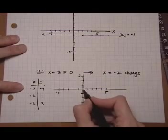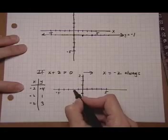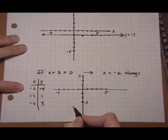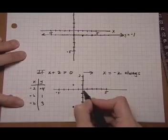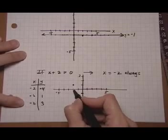So if x is minus 2 and y is minus 4, it's right down here. x is minus 2, y is 1. x is minus 2, y is 3.